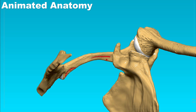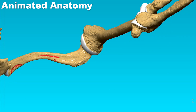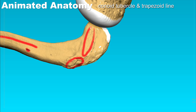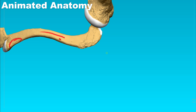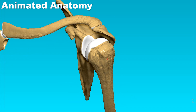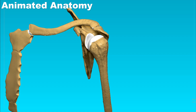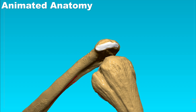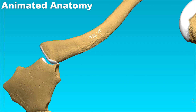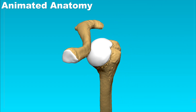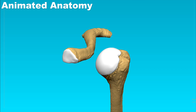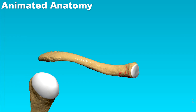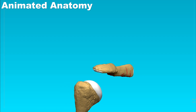If we remove the scapula, we can also see the coracoid tuberosity, which consists of the conoid tubercle and the trapezoid line. Here we can see the articular surface for the acromion of the scapula, and here the articular surface for the sternum. The sternal end is triangular, and the body is also triangular, though it is harder to notice because the edges are somewhat rounded.